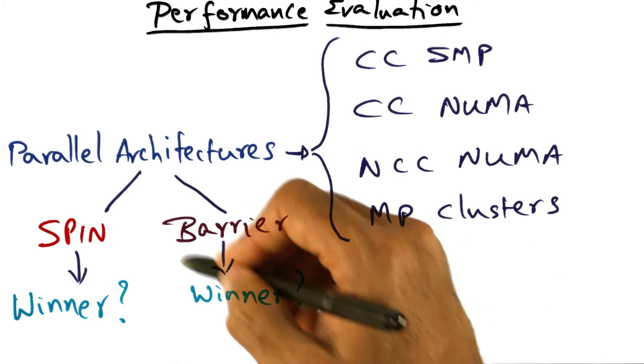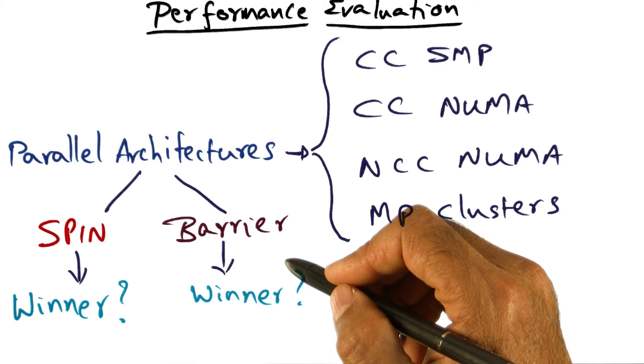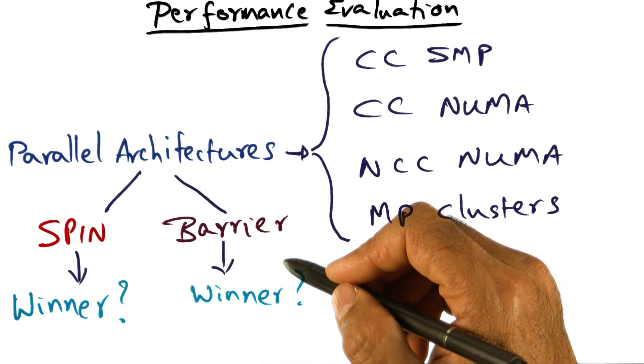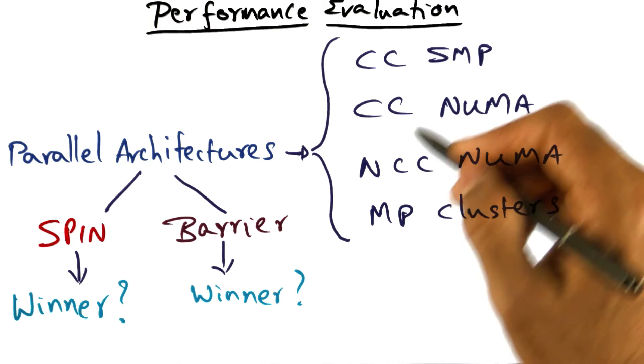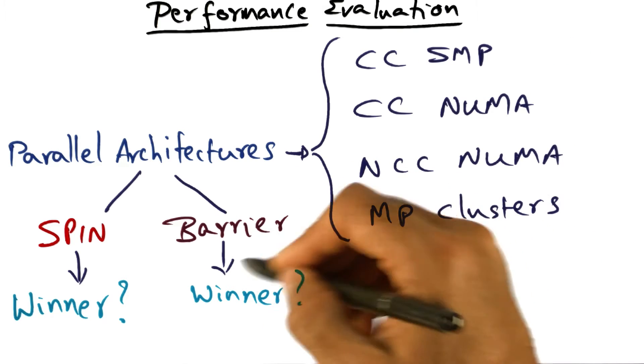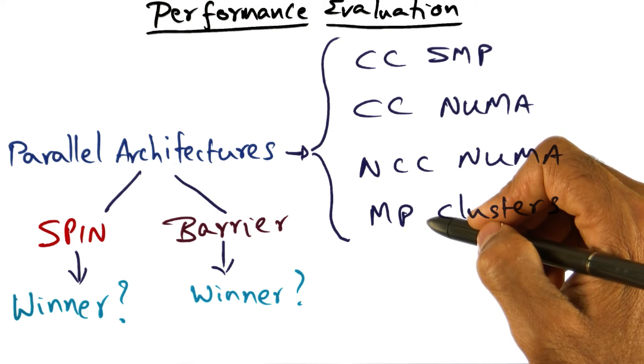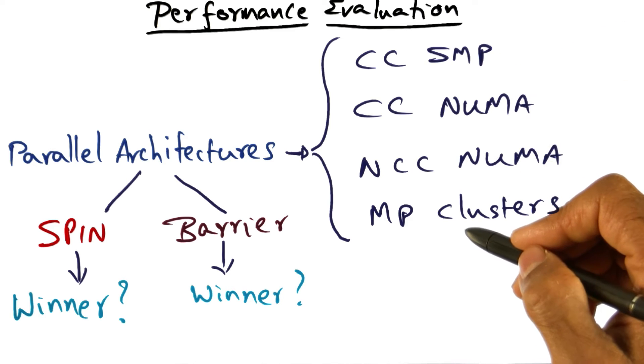And the same thing you should do for the barrier algorithms as well. So the barrier algorithms, all the way from the counter to the dissemination barrier, all are different flavors of algorithm and you have to ask the question, which would be most appropriate to implement on these different flavors of architectures.